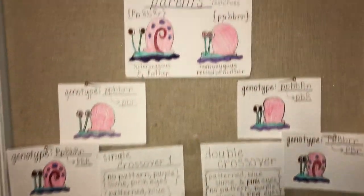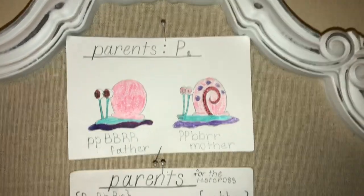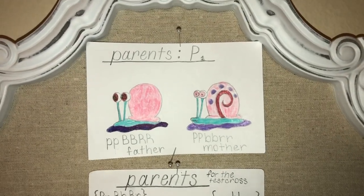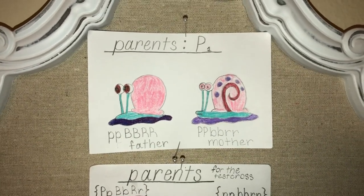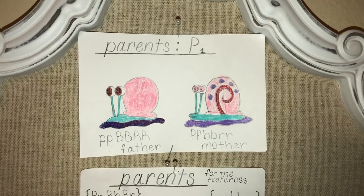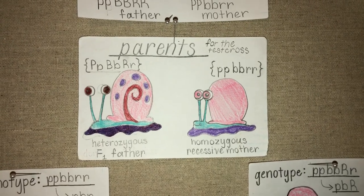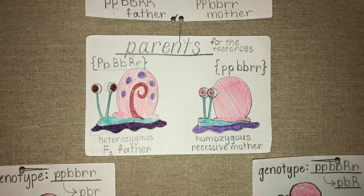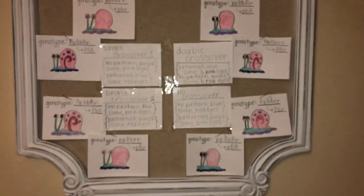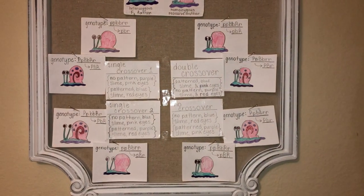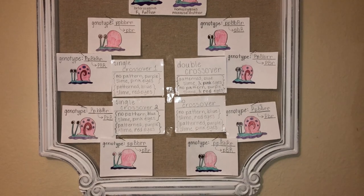We can use this information to work backwards. We found that our P1 generation — our two purebred snails — are both homozygous at each separate locus. From there we developed our F1 individual, who is heterozygous for all three traits, and we test cross him against our homozygous recessive mother. From there we derive our eight potential gamete types, all stemming from the genetic arrangement of the father's loci.